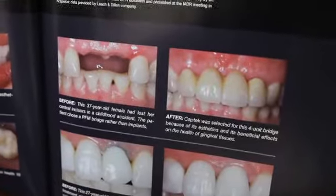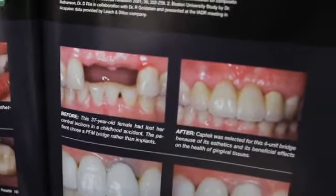The next approach to filling in a space is to use something called a bridge. This is where we use the teeth on either side of the space to then permanently cement something to fill in that space. The downside to this is it does require modification of those adjacent teeth.